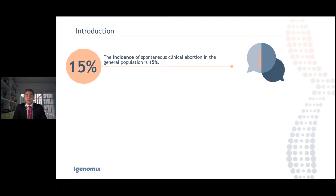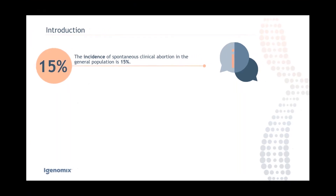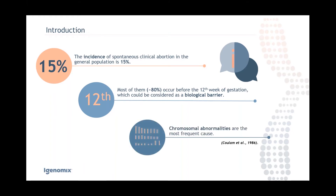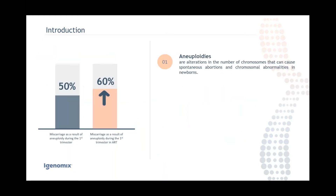We all know that the incidence of spontaneous clinical abortion in the general population is around 15%, and around 80% of those occur before the 12th week of gestation, which could be considered a kind of biological barrier. Chromosomal abnormalities are the most frequent cause of those clinical miscarriages — aneuploidies, which are alterations in the number of chromosomes, can cause spontaneous abortions.